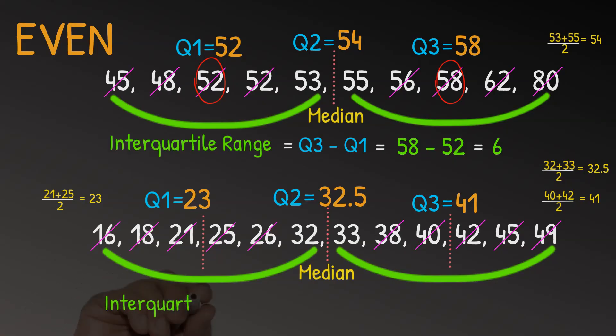So now working out the interquartile range is easy. Q3 minus Q1, which is 41 minus 23, which is equal to 18.